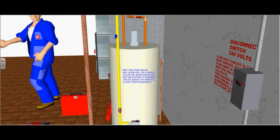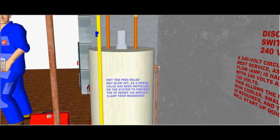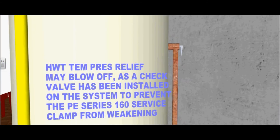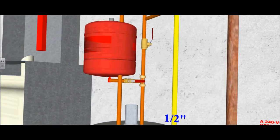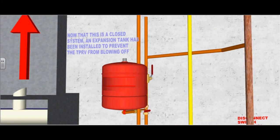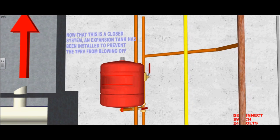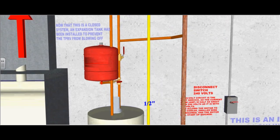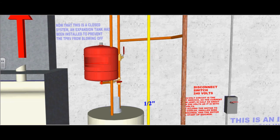In this particular case, the hot water tank temperature pressure relief valve may blow off, as a check valve has been installed in the system to prevent the polyethylene service clamp from weakening. In this case, now that it is a closed system, an expansion tank has been installed to prevent the temperature pressure relief valve from blowing off.